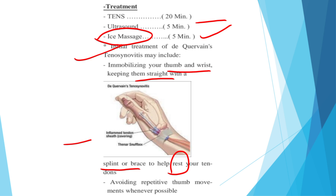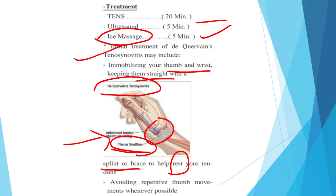You can see these are the inflamed tendons, and this is the anatomical snuff box. This is the condition of De Quervain's Tenosynovitis, where the abductor pollicis longus and extensor pollicis brevis become inflamed.